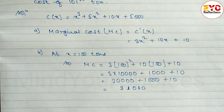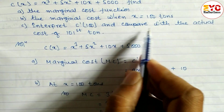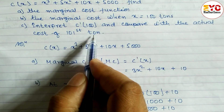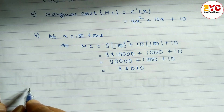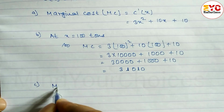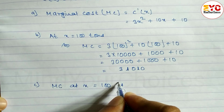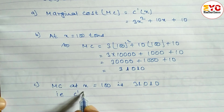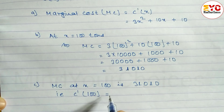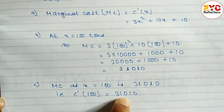Now for part c, we compare with the actual cost of 101 tons. Marginal cost at x equal to 100 is 31,010. So C(100) at x equal to 100 gives marginal cost of 31,010.